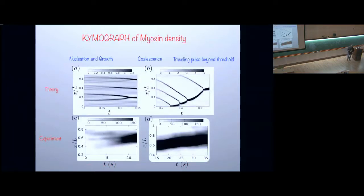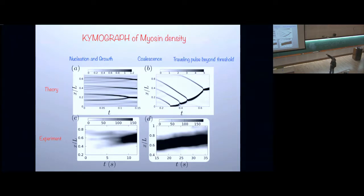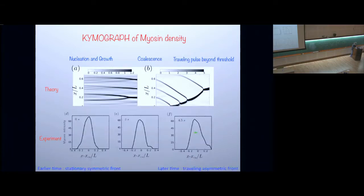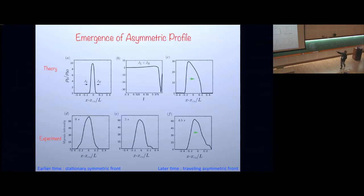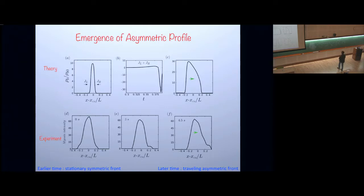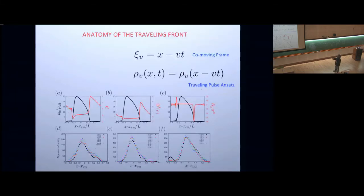Now comparing theory results to experiments at the early times where we feel the theory is valid — these are kymographs of space-time plots of myosin density, theory and experiment. You can see nucleation of myosin, then coalescence, and once it attains a certain size, it has a non-zero slope and therefore moves. Beyond a certain threshold it starts moving. Once it moves, it attains a particular shape. Just prior to the onset of movement the myosin pulse has symmetry, and on the onset of movement it has this kind of asymmetry — shown both in theory and experiment.